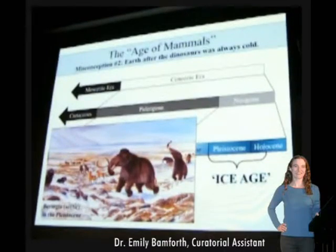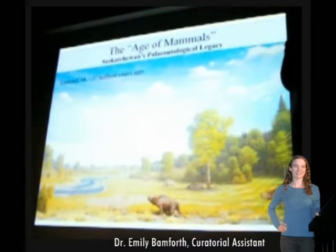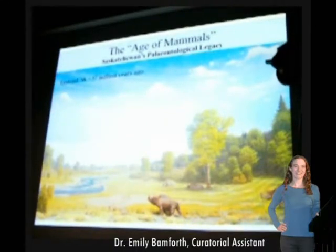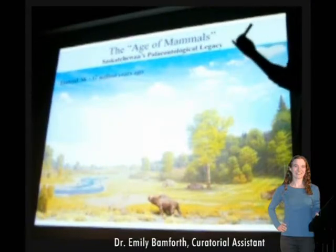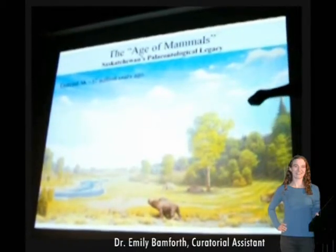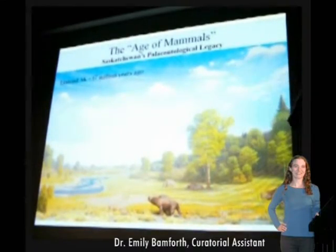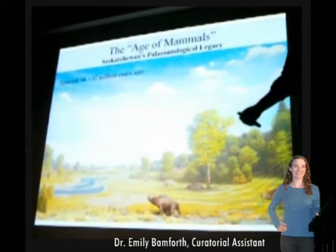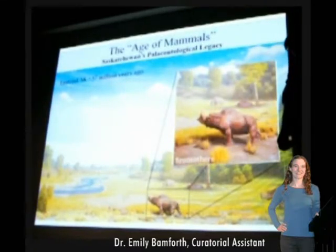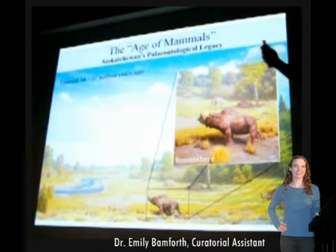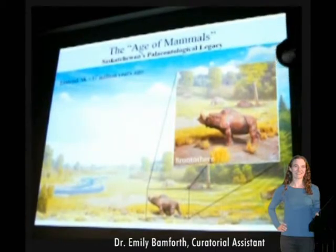I want to briefly detour and talk about some of the fossils in Saskatchewan. Saskatchewan paleontology has historically been heavily based in the age of mammals, the Cenozoic. This is a reconstruction from the Royal Saskatchewan Museum in Regina showing what East End might have looked like about 37 million years ago — the end of the Eocene, beginning of the Oligocene. One character you might recognize is the brontothere. We have a brontothere skeleton in our gallery. These were animals basically like rhinos, a little larger than a modern rhino, with two protuberances — two horns — on their head.